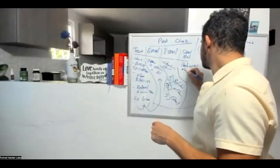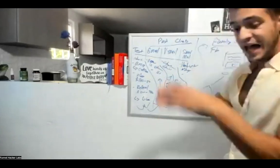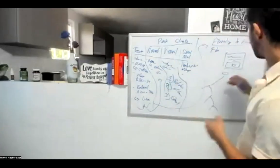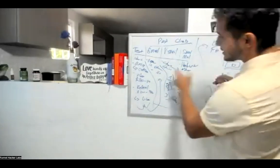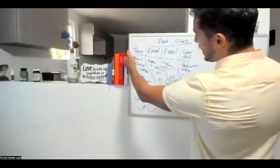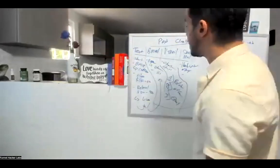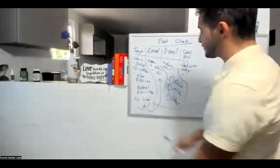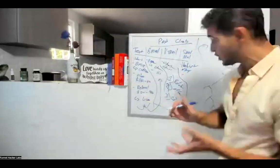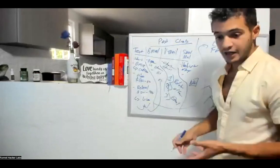On the postcard or letter, handwrite the address — that increases open rates. Include the same offer: Google My Business review gets coffee, video testimonial gets cash, referral gets cash. Also put a QR code on the letter to make it as simple as possible for them. Maybe that QR code goes to the same Linktree we talked about before, with all the links at the top and a 'how to make money with us' section at the bottom.